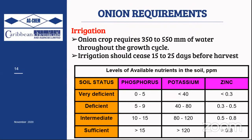A soil test nutrient reference table helps farmers assess nutrient levels. For phosphorus, 0–5 ppm is deficient while greater than 15 ppm is sufficient. For potassium, less than 40 ppm is deficient while 120 ppm is sufficient. These benchmarks apply similarly to other key macro and micronutrients relevant to onion production.